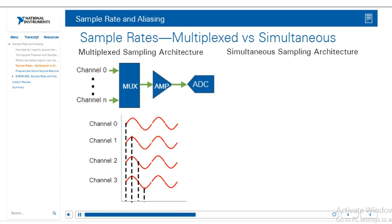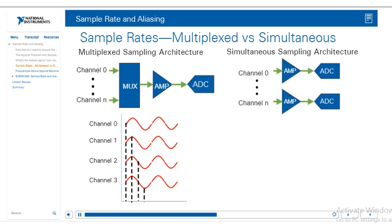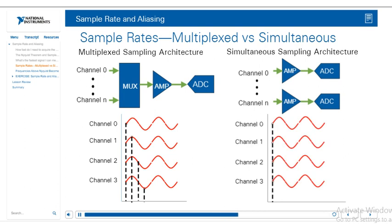The other possible architecture is called a simultaneous sampling architecture. This is when every channel has its own amplifier and ADC. This architecture is more expensive, but it does allow you to perform simultaneous sampling on all of your channels. Knowing all of this, it's important to keep in mind that if your DAC device is multiplexed, your sample rate will change when measuring with multiple channels at the same time.